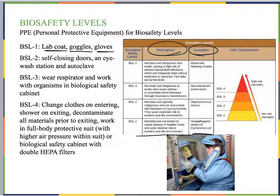Just slightly up from that is BSL-2. In BSL-2, we have microbes that are typically indigenous and associated with diseases of varying severity — they pose a moderate risk. These are things we do have in our environment that we work with and can get sick from. In North America, for example, BSL-2 organisms are things that pose a moderate risk to become infectious or cause disease.